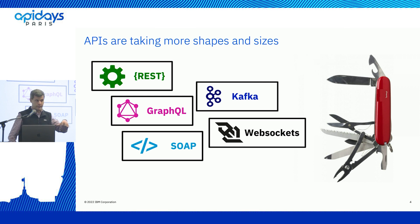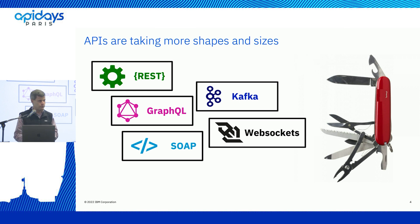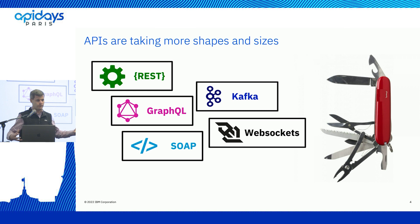APIs are taking more and more shapes and sizes. REST has been the focus of a lot of API evolution over the last five to ten years — it's very common and popular. But now we're seeing other protocols as well. SOAP has been an enterprise standard for about 20 years, and a significant portion of large enterprises still have many SOAP services. We're also moving into newer protocols like GraphQL, Kafka, and WebSockets, providing a full spectrum of how services can be consumed.